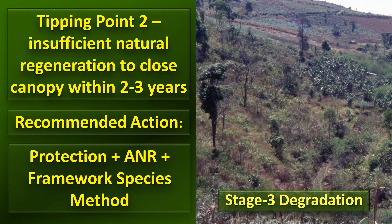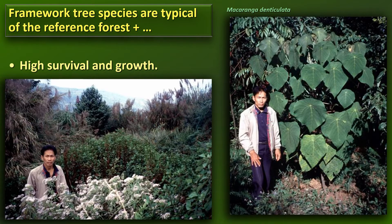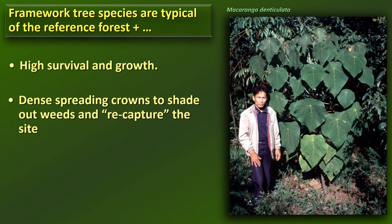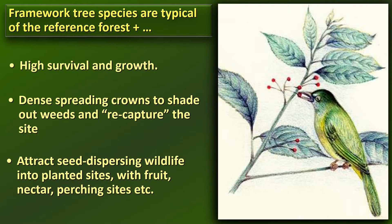Luckily, you don't have to plant all the tree species that made up the original forest ecosystem, because there are still seed dispersers in these landscapes and still remnant pieces of forest to act as seed sources. The tree species we plant under these circumstances are called framework tree species — typically around 10 percent of the species characteristic of the reference forest. They are selected for high survival and growth rates when planted in dry, open, exposed areas; dense spreading crowns that shade out weeds and rapidly recapture the site; and fruit, nectar, or perching sites to attract seed-dispersing animals that will bring in seeds of all the other species.